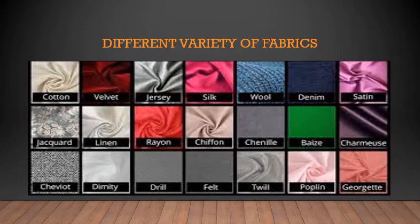After their visit to the cloth shop, Paheli and Bojo began to notice various fabrics in their surroundings. They found that bedsheets, blankets, curtains, tablecloth, towels and dusters are made from different kinds of fabrics. Even their school bags and gunny bags were made from some kind of fabric. They tried to identify these fabrics as cotton, wool, silk or synthetic.